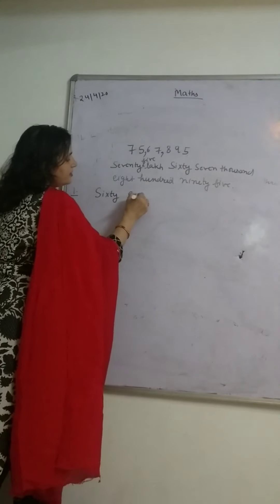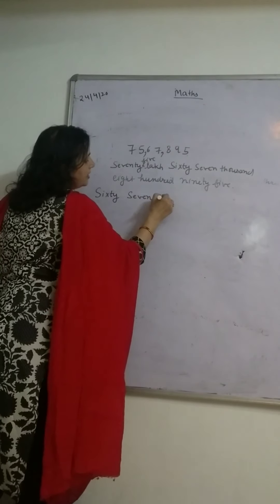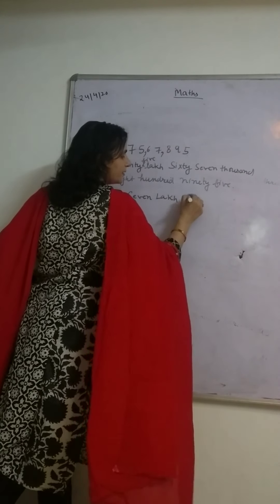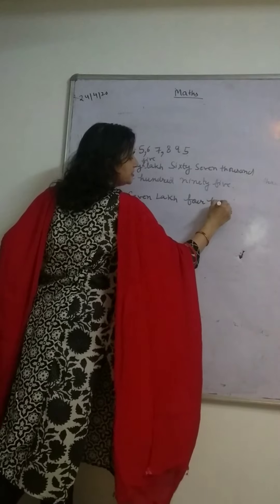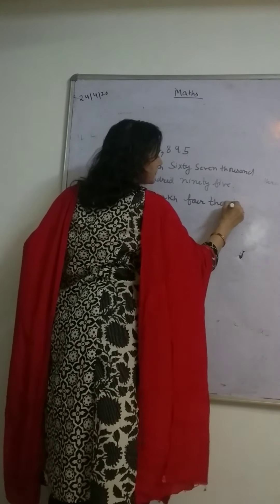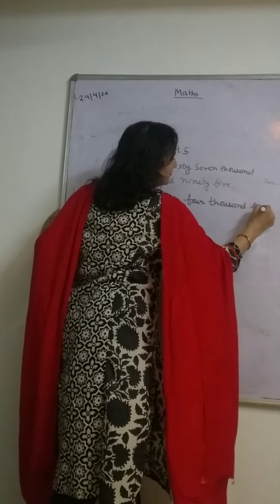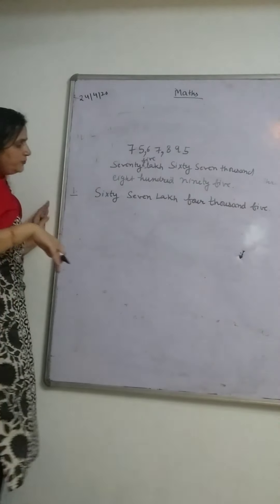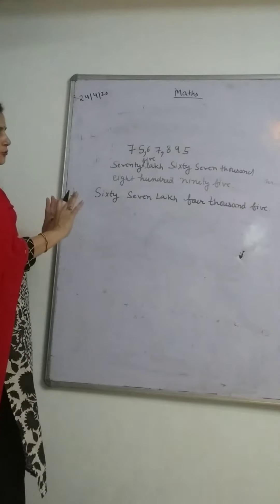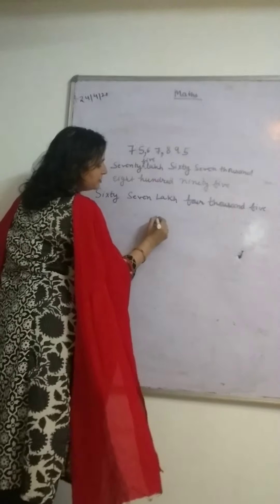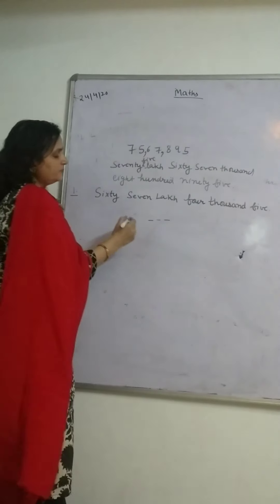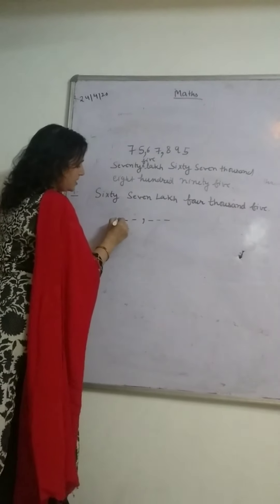For example: sixty-seven lakh, four thousand, five — we have only 67 lakh, 4 thousand, 5. This is the simplest way how to write the number name. Just like this.